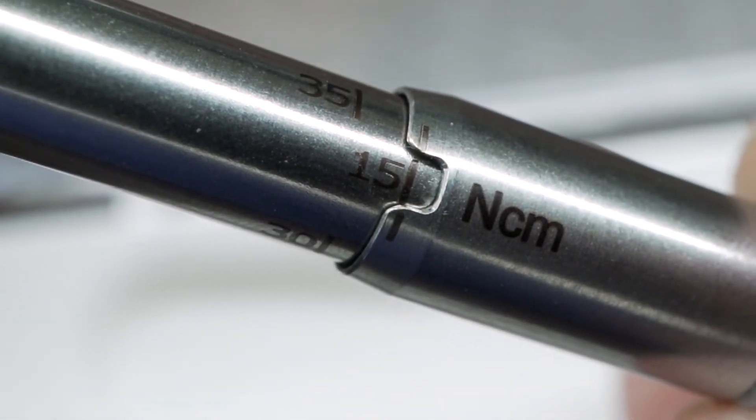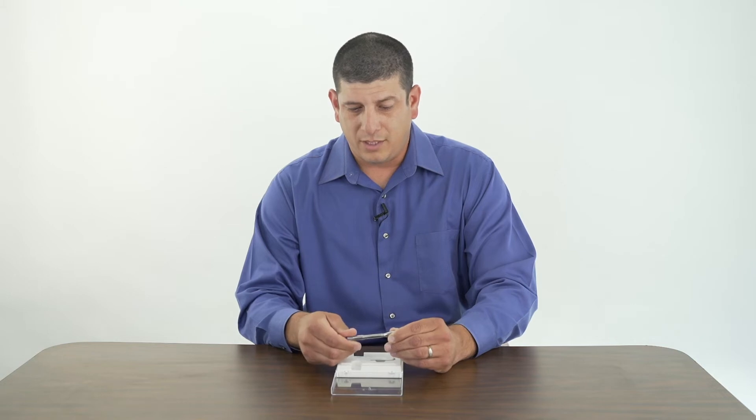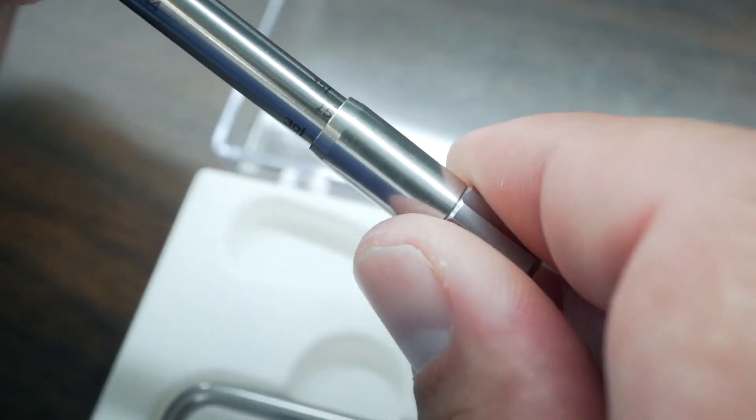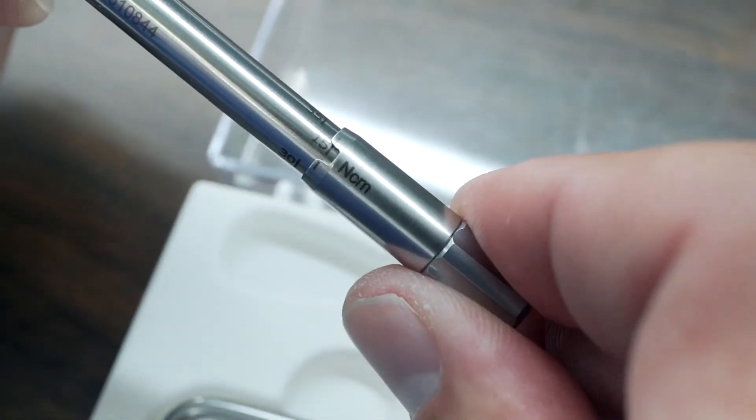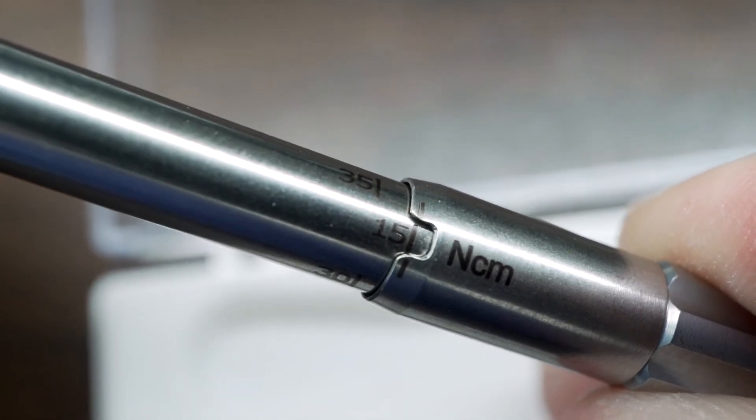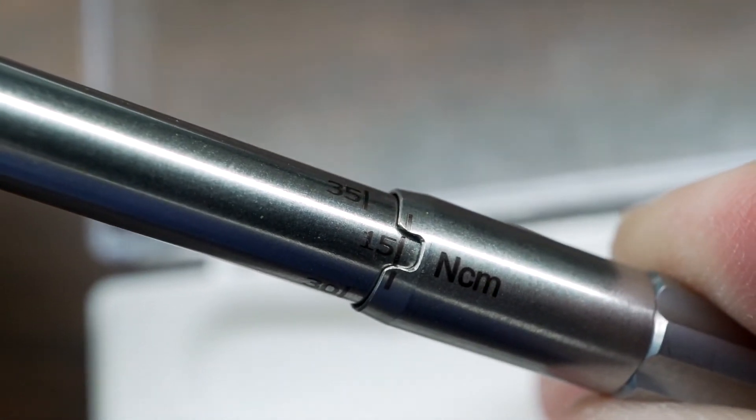So all you're going to do is turn this tool down to your torque value setting. So if you're adjusting it to 15 newton centimeters, you turn the handle till the 15 newton centimeter line is in the middle of the two lines on the handle.